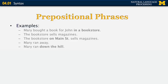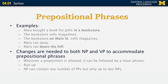What are prepositional phrases? Consider: Mary bought a book for John in a bookstore. The bookstore on Main Street sells magazines. Mary ran away. Mary ran down the hill. Every time we have a noun, it can be followed by a prepositional phrase — John can be followed by in a bookstore, bookstore can be followed by on Main Street. The same applies to verbs: every time a verb can be followed by a preposition like ran away, it can also be followed by a full prepositional phrase like ran down the hill. So we allow a new constituent PP that can be embedded in either the NP or the VP.